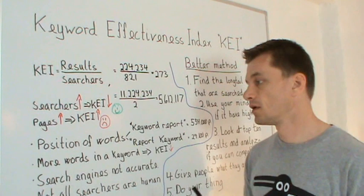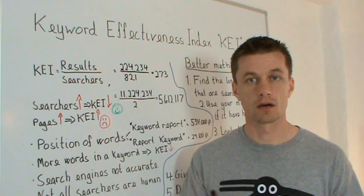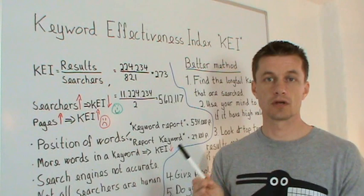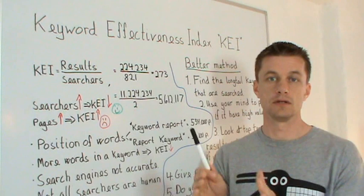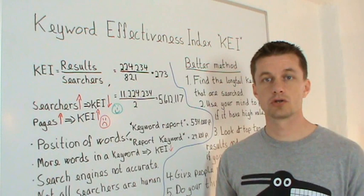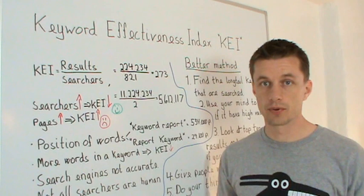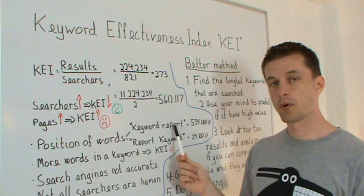There are some drawbacks, so let's go through some of them. You have to bear in mind that the position of the words matters quite a lot. If you get a low KEI on some keywords you have to think: is this a natural order that the keyword is in? Because usually you search for your keyword phrase in quotes to get a more precise result. Let me give you an example.